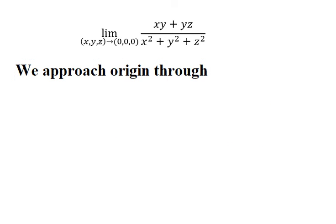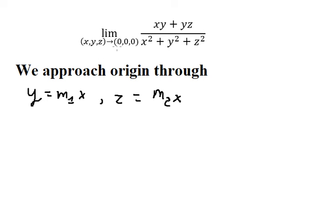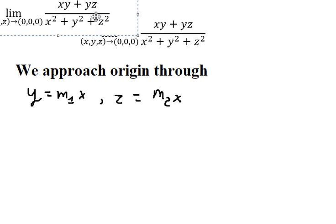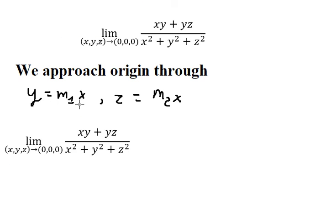The first thing is y equals m₁·s and z equals m₂·s. Because when s approaches zero, y and z both go to zero. In this situation, I will substitute y and z with m₁·s and m₂·s, so we just have an expression like this.